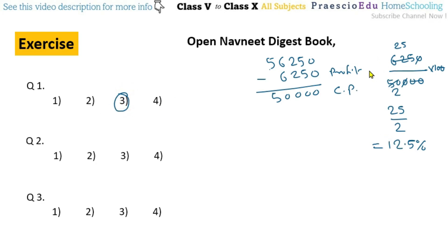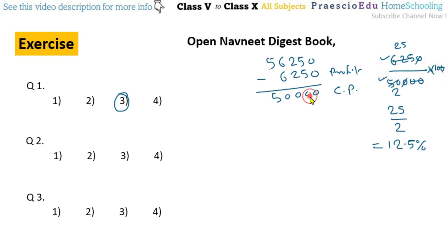Always remember: profit percentage equals profit divided by CP (cost price/buy price), then multiplied by 100. Here CP was not given, so to find the CP from the selling price (SP), we deduct the profit to get the CP.